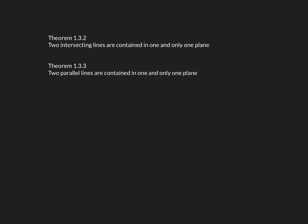Okay, so the last two theorems I want to talk about are also on page 13. The first one is that two intersecting lines are contained in one and only one plane. So, if we have two lines that intersect, they have to be in the same plane, and there's only one plane that they can be in.